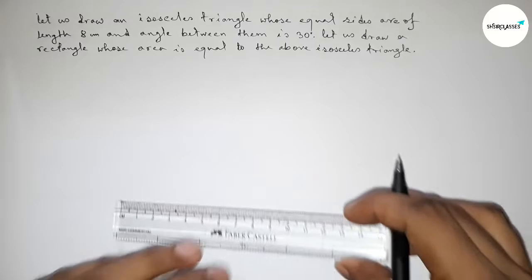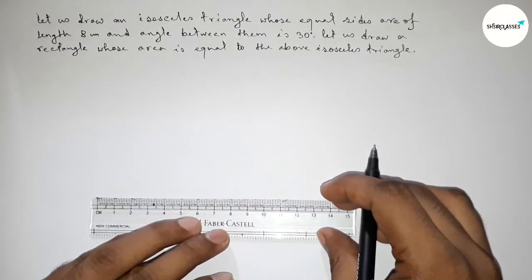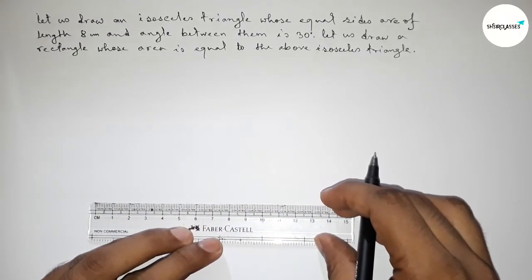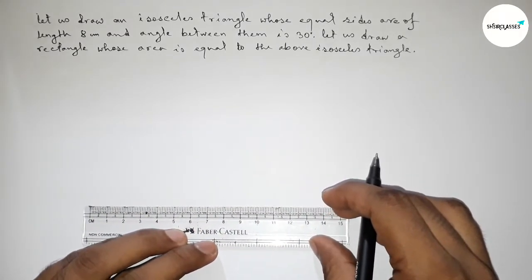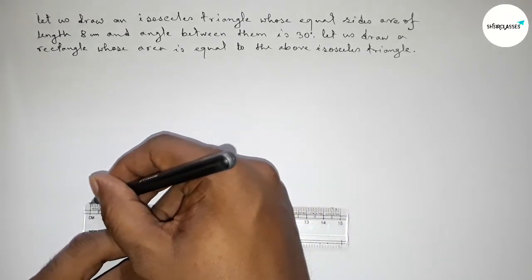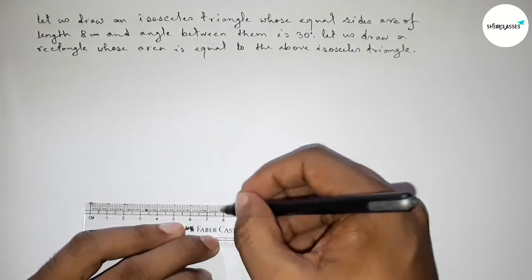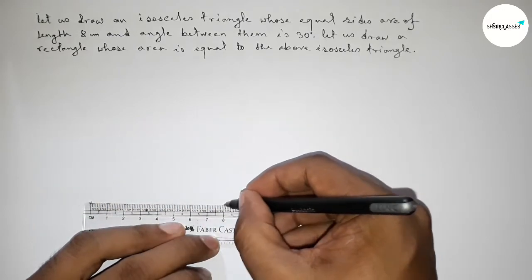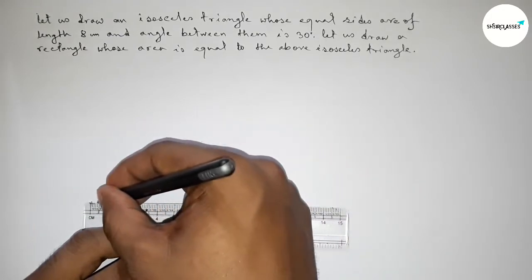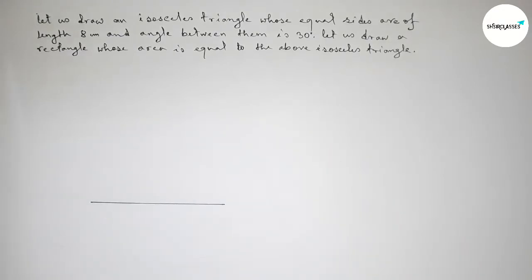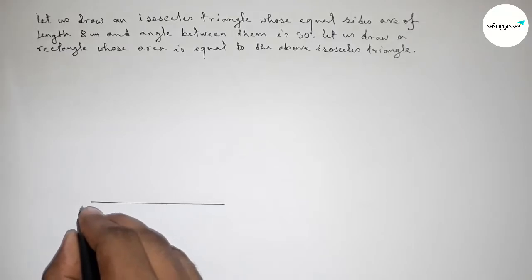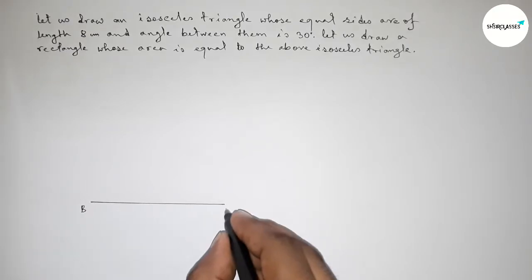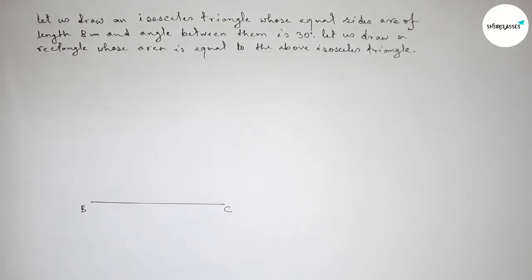First of all we have to draw a line of length 8 centimeters. This is 8 centimeters. Now taking point B here and point C here. Next we have to draw a 30 degree angle at point B.